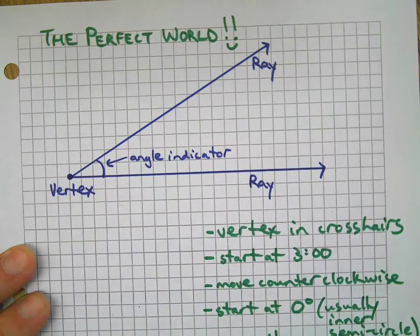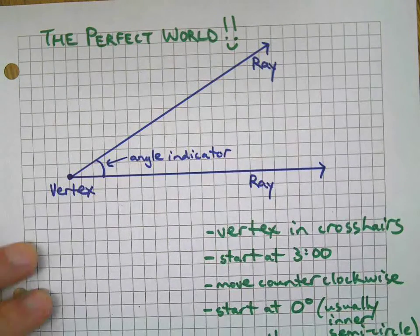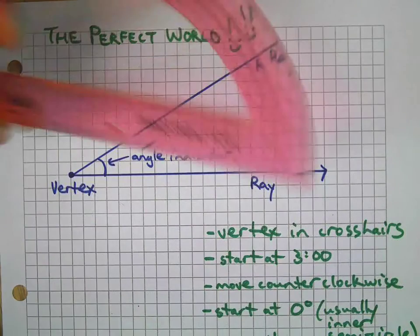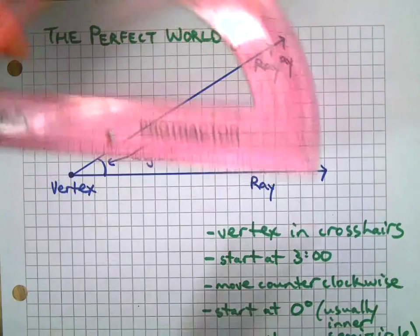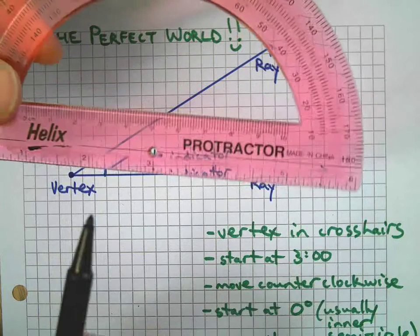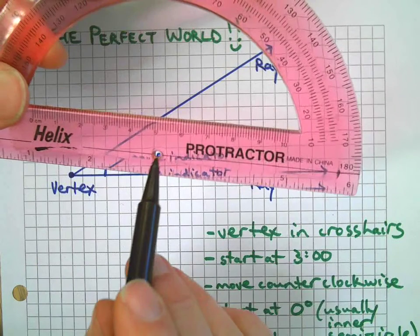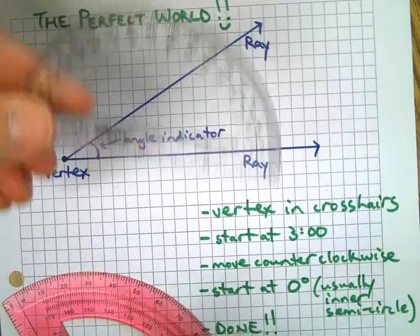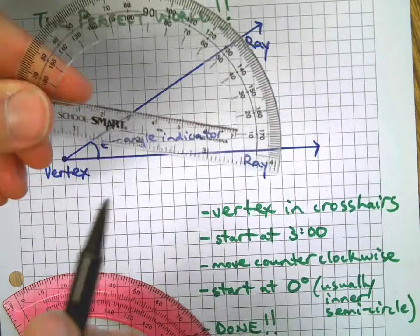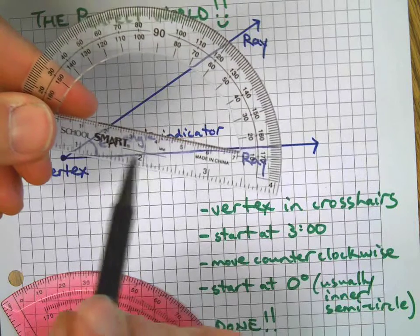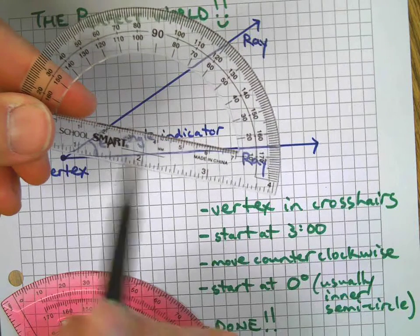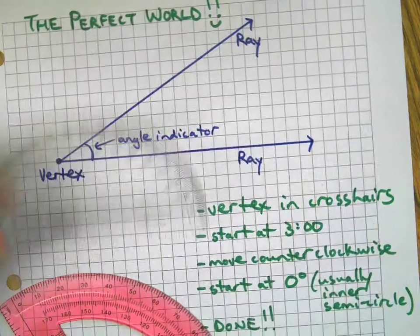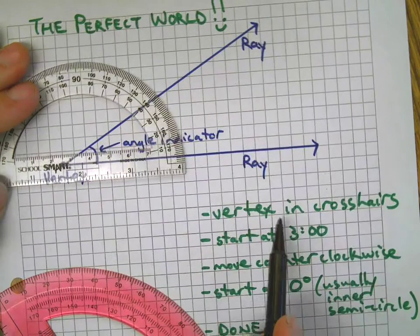In the perfect world, here's what you do: find the crosshairs. On some protractors there's a dot right there. On other protractors like this little guy, you see those crosshairs - X marks the spot. That's where you put the vertex.